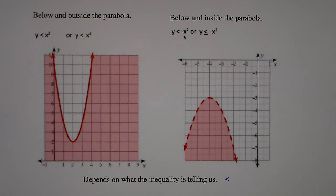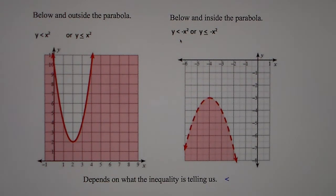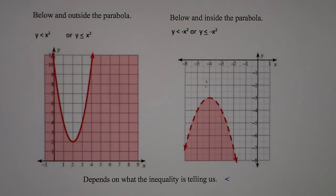On the right-hand side, we have y is less than negative x squared, or y is less than or equal to negative x squared. So anytime we have y < −6x², y < −10x² + 2x + 8, or y < −9x² + 7x − 2 — as long as y is less than negative x squared — the parabola goes down and we shade on the inside. When it's less than, that's a dashed line; if it's less than or equal to, it's a solid line. Either way, you shade below and inside the parabola.